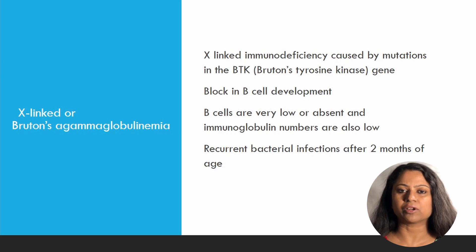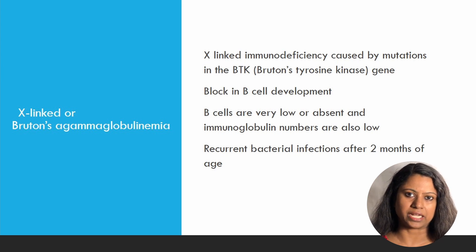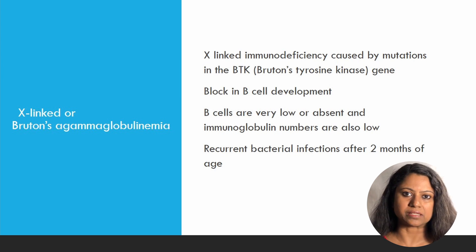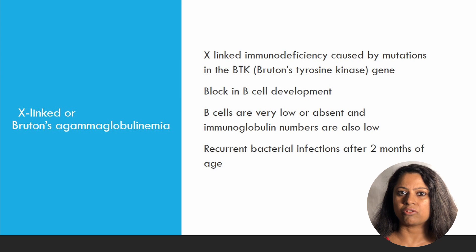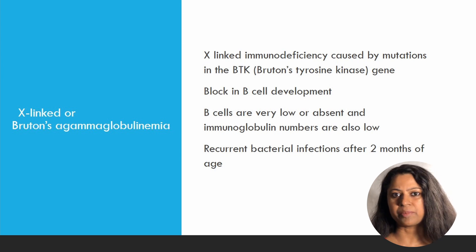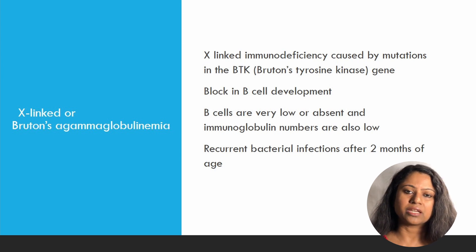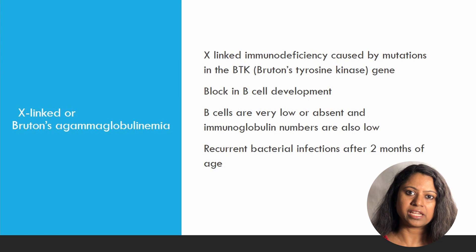Bruton's X-linked agammaglobulinemia is an inherited disorder caused by a defect in Bruton's tyrosine kinase, a special tyrosine kinase important in the development of B cells. Because of this defect, B cells cannot develop in the bone marrow. As a result, lab findings show a complete to total lack of B cells as well as immunoglobulins in the blood, and there will be neutropenia. Clinically, it presents with recurrent pyogenic infections, which begin after two months of life, since the neonate is protected by maternally acquired IgG from the placenta in the initial two months.